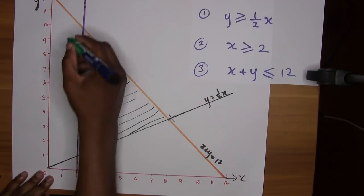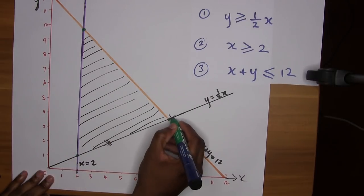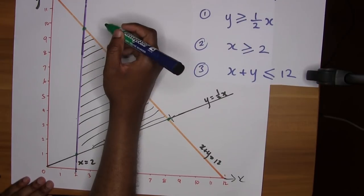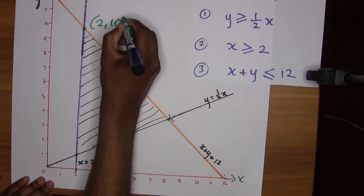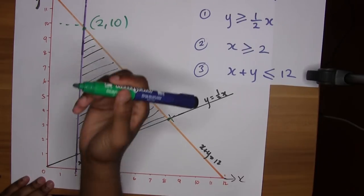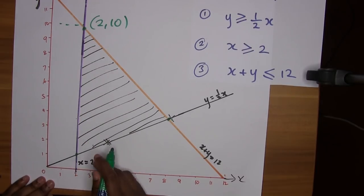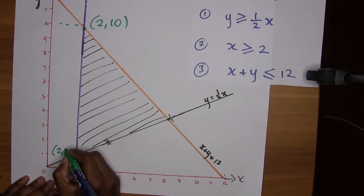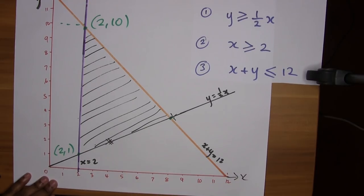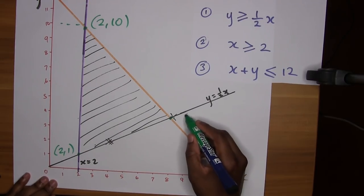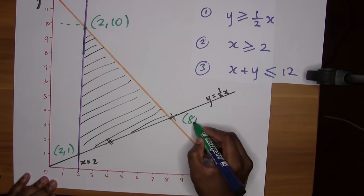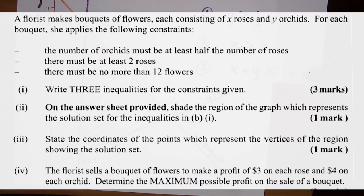Now we need to state the coordinates of the vertices for part three. The vertices are represented by 2, 10. My graph's a little sketchy, this is 10 and this would be 2, 1. And finally across here we expect 8, 4. So that's another one mark.